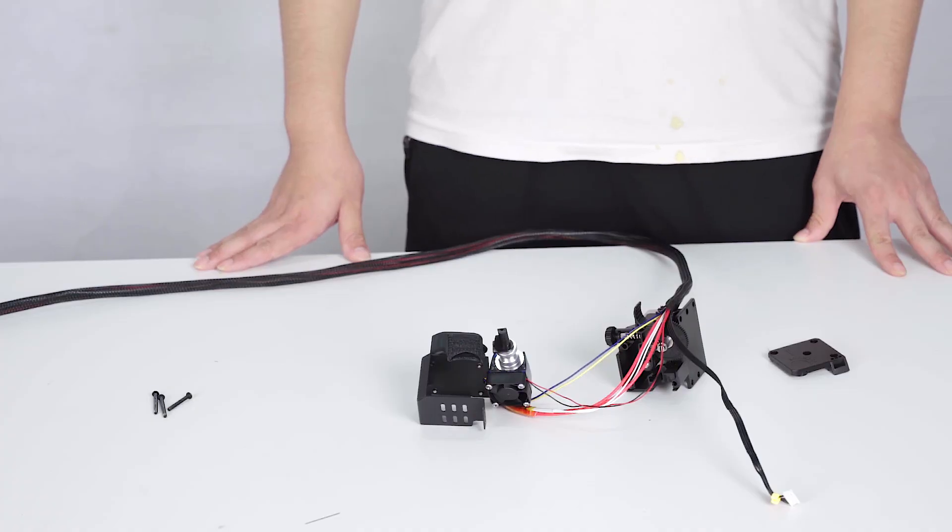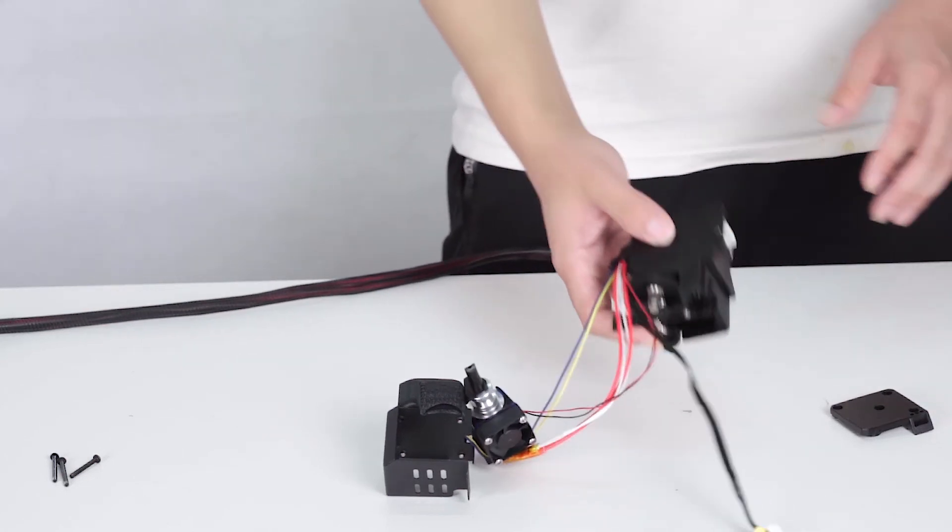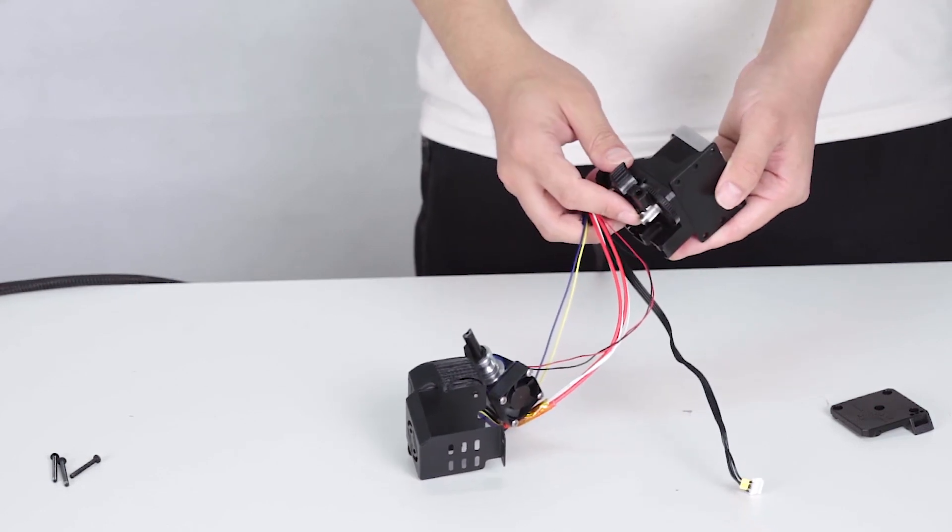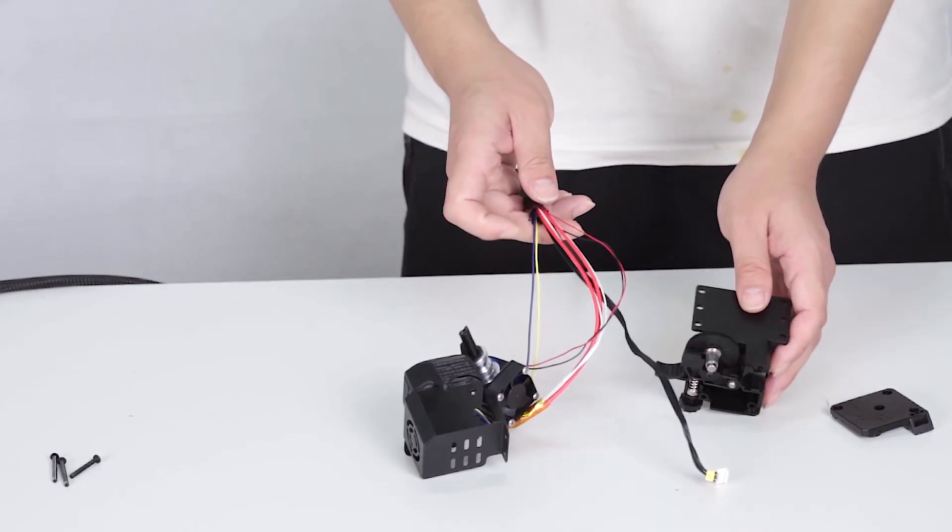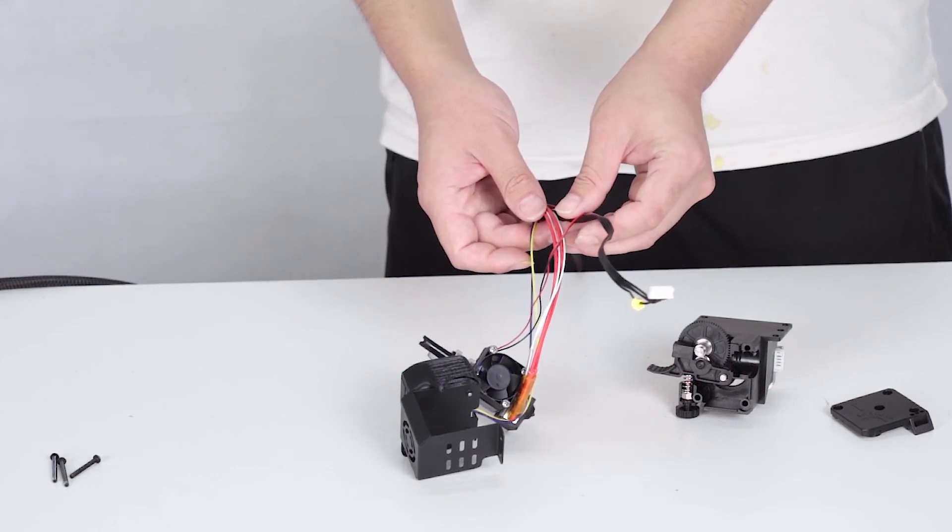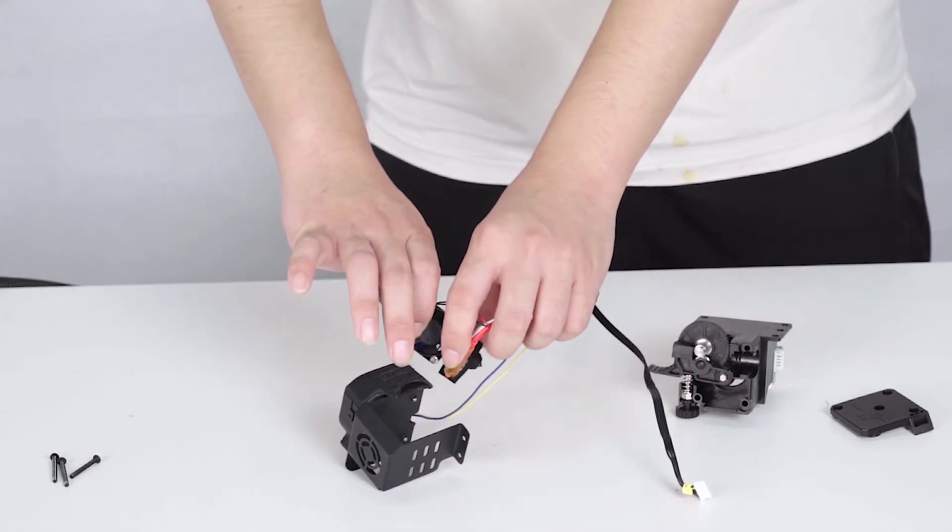Now let us have a look at different parts of this upgraded Extruder Kit. First, let us have a look at the bracket holder. Then, come with the step motor and the gear. And then, don't forget these cables connected to the main board.